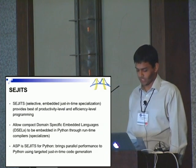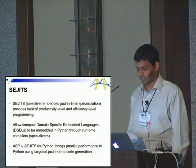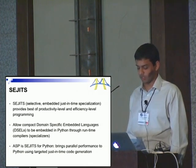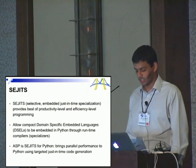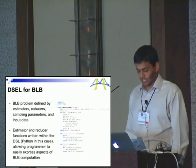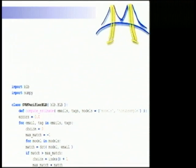There's a SEJITS framework called ASP, which stands for ASP is SEJITS for Python. ASP is a powerful framework that allows us to bring parallel performance to Python using targeted just-in-time code generation. It provides an interface which allows multiple applications to be built and run upon multiple parallel frameworks using a single specializer. Each specializer contains tools to translate functions written in Python into equivalent functions written in low-level efficiency languages. We used the ASP framework to create a specializer for the BLB algorithm, enabling productivity programmers to take advantage of a high-performance and parallel implementation of BLB.